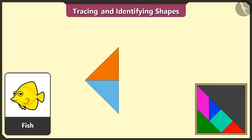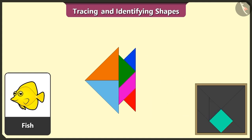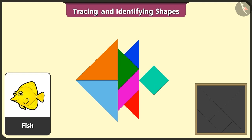This is a fish. Let's try and create a fish using two triangles, one quadrilateral, and one triangle, two more triangles, and one square. And we have created a fish!